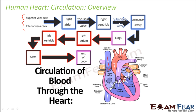From the right ventricle it enters into the pulmonary valve. Then it goes into the pulmonary artery, which takes it to the lungs, because this is deoxygenated blood. In the lungs, oxygen is taken in from the atmosphere and the deoxygenated blood gets converted into oxygenated blood.